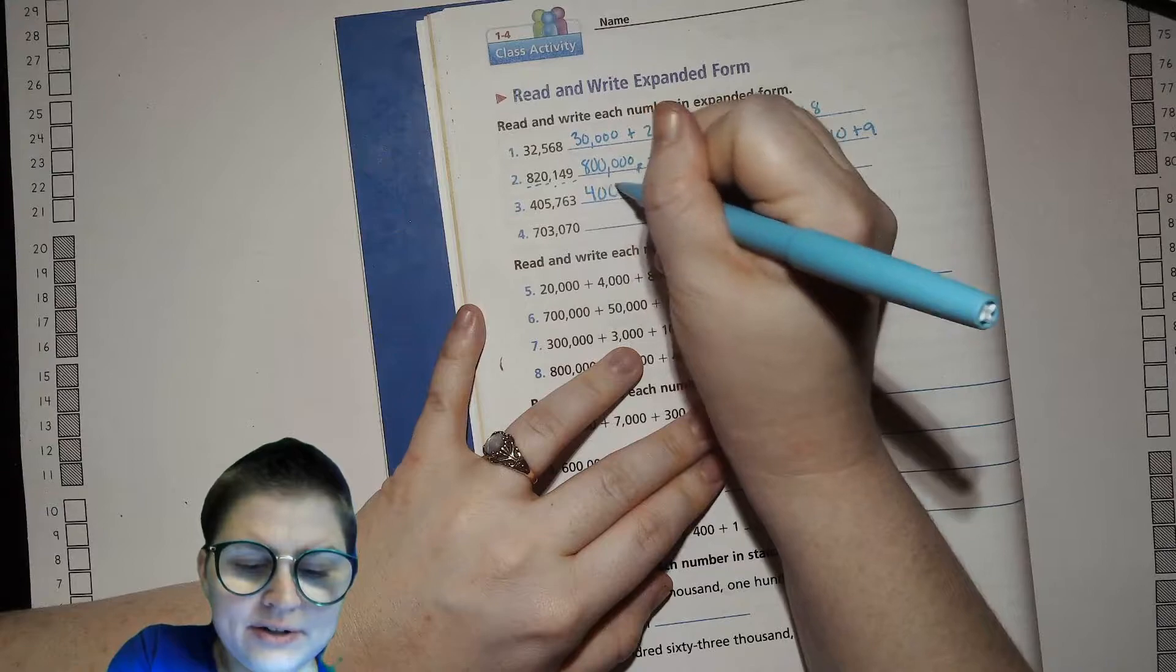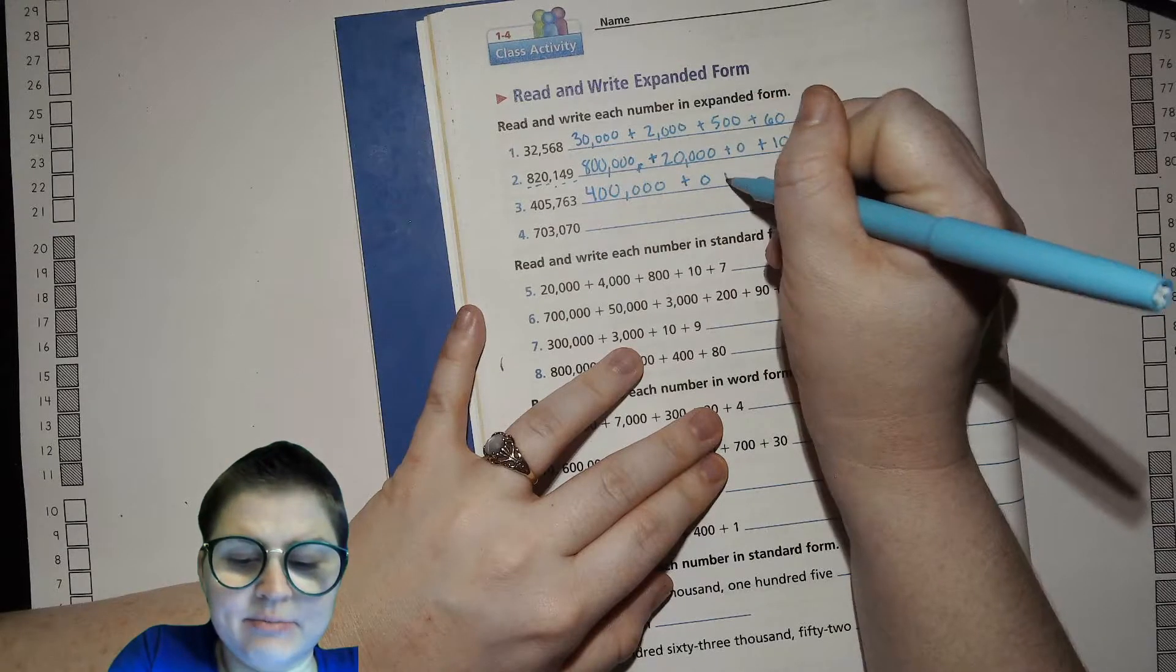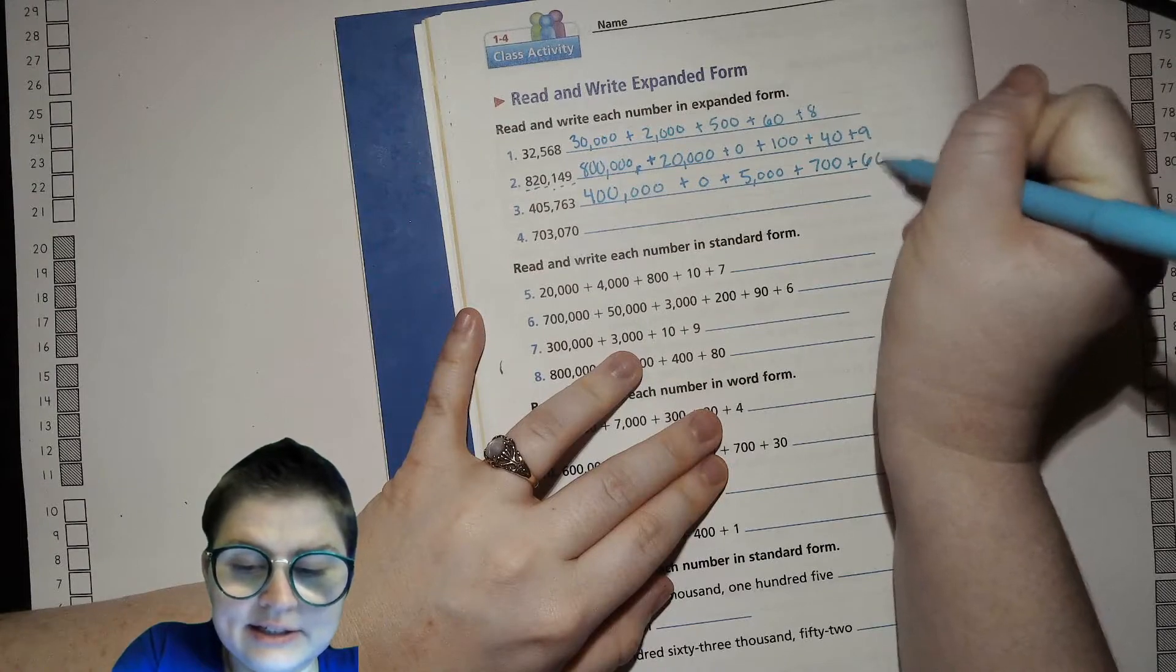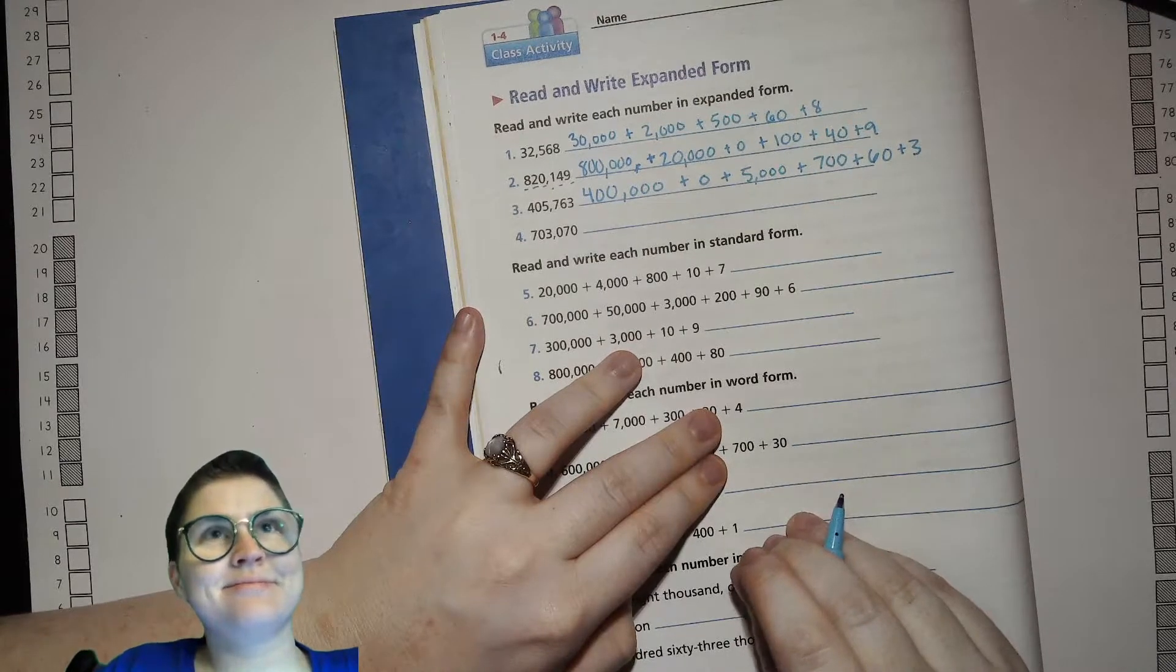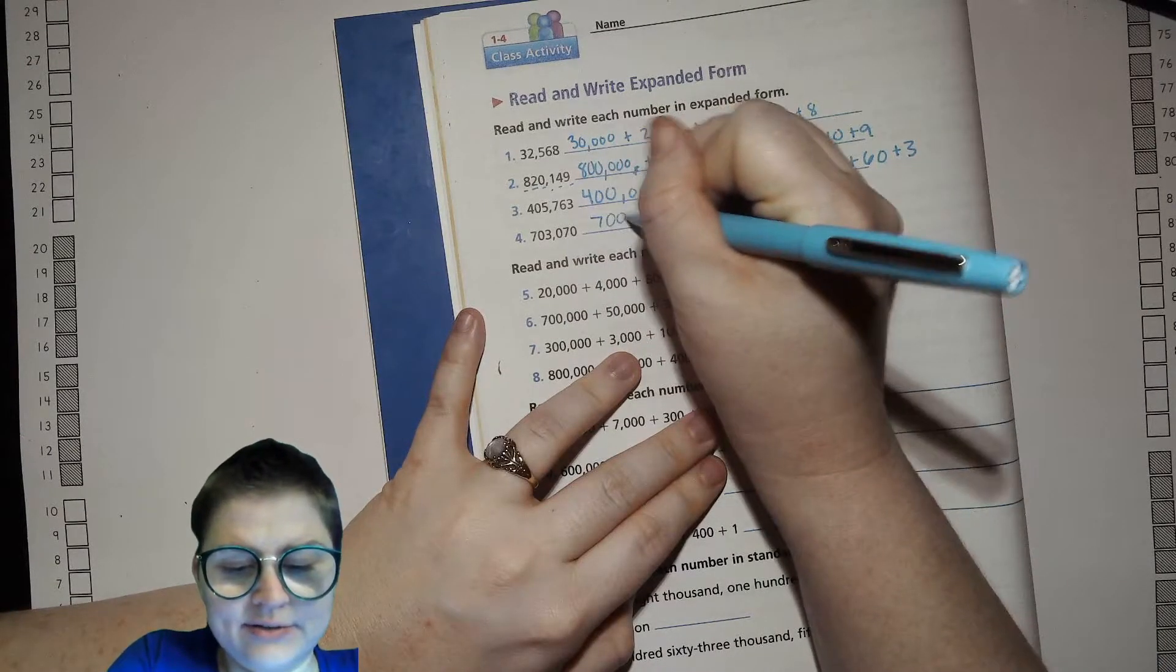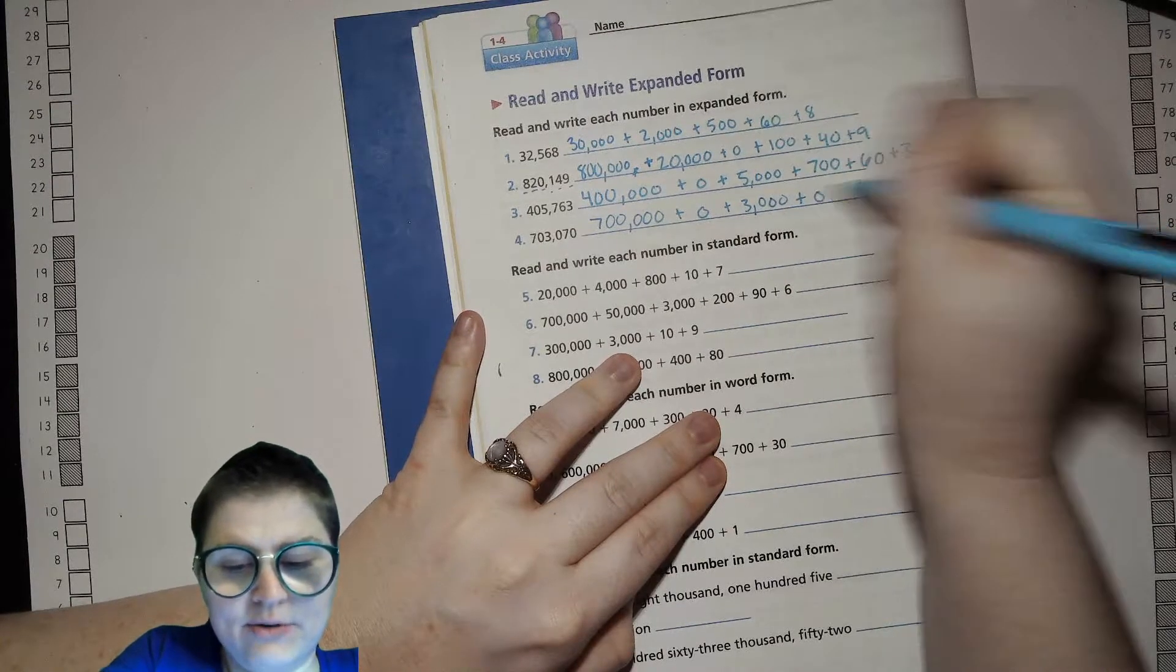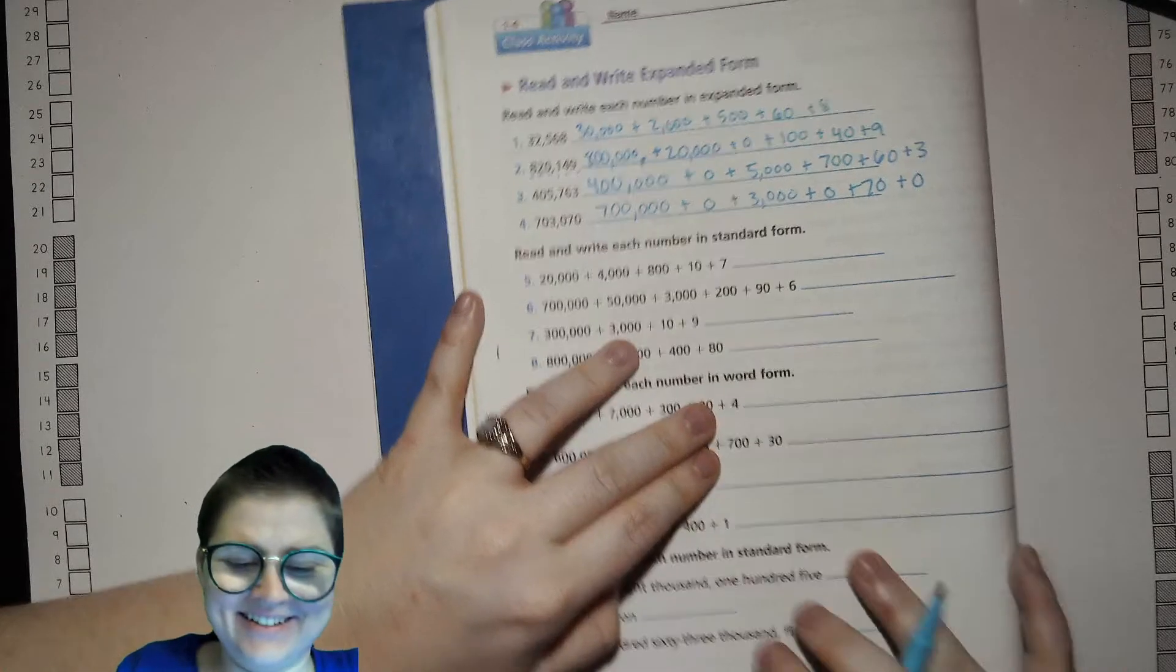400,000 plus no 10,000 plus 5,000 plus 700 plus 60, we're in another space, plus 3. Try this one by yourself, see how you're doing. 700,000 plus no 10,000 plus 3,000 plus no hundreds plus 70 plus no ones.